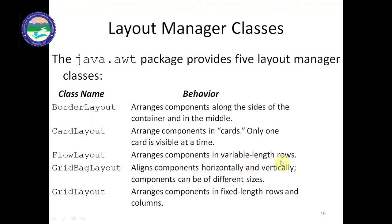Flow layout arranges components in variable-length rows, row by row. Border layout arranges components along the sides of the container. Card layout arranges components as cards — only one card is visible at a time, though you can display other cards. Grid layout aligns components horizontally and vertically when components can be different sizes. For fixed-size components, we place them in rows and columns. These five layouts are used to arrange AWT components in a window.